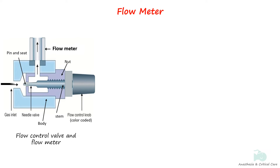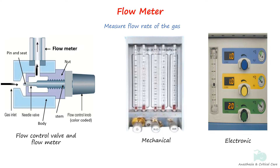After the gases pass through the flow control valve of the intermediate pressure system, the gas is directed into the flow meters. Flow meters, also known as flow indicators, flow tubes, or rotometers, indicate the rate of flow of a gas passing through them. They may be mechanical or electronic. Electronic flow meters usually have a representation of a mechanical flow meter on a screen, or a number representing the flow.